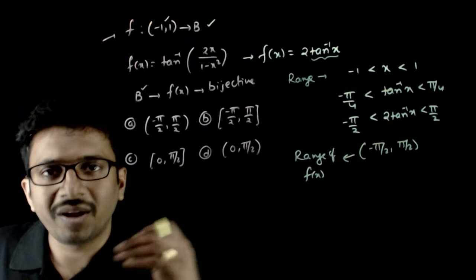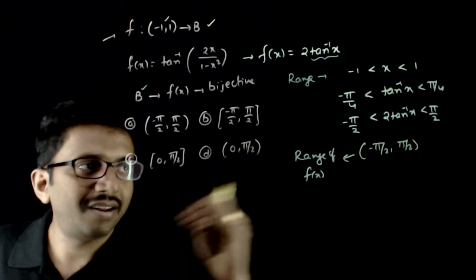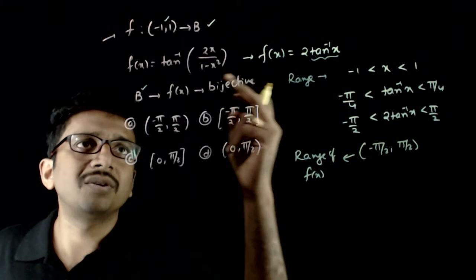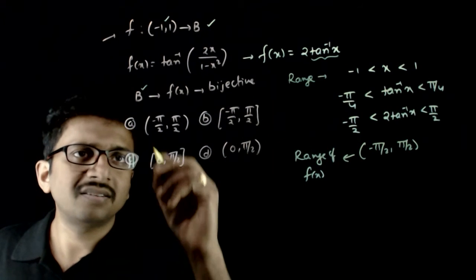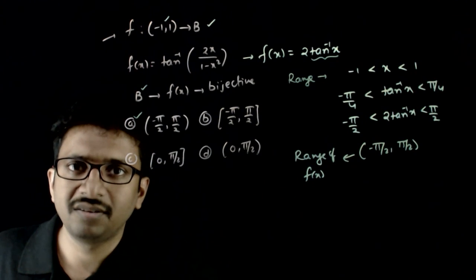For this function to become a bijective function, the range should be same as codomain. So what is the codomain? The codomain which is B has to be same as minus pi by 2 to pi by 2. So option A is the right answer. Thank you.